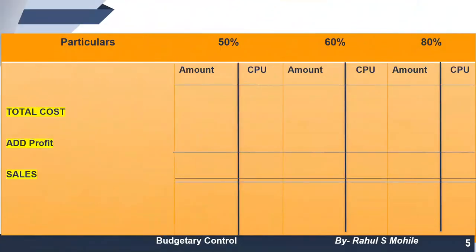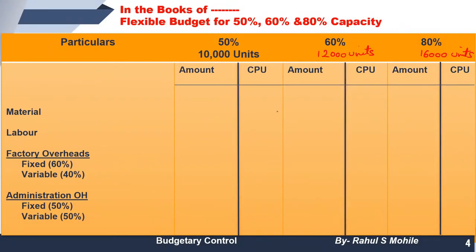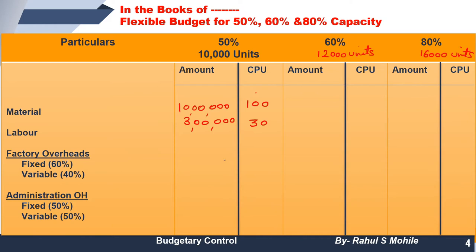Material per unit is 100 rupees and labor per unit is 30 rupees. For 50% capacity: material = 100 × 10,000 = 10,00,000 rupees; labor = 30 × 10,000 = 3,00,000 rupees. These are simple multiplications — 100 per unit times 10,000 units, and 30 per unit times 10,000 units.